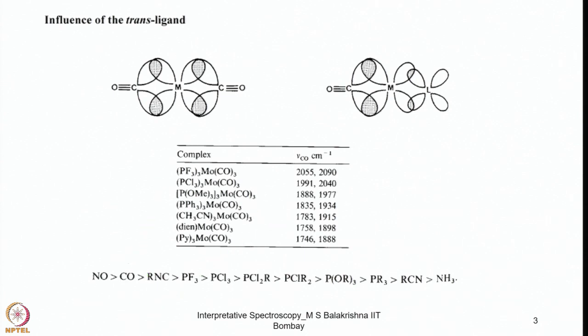When we talk about the position of ligands in the spectrochemical series, we are considering sigma donor ability, pi donor ability, as well as pi acceptor ability — considering all those things together. We have made a spectrochemical series; similarly, for back-bonding ligands, one can also construct a spectrochemical series following this order.